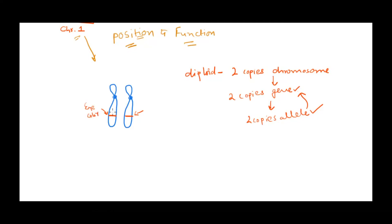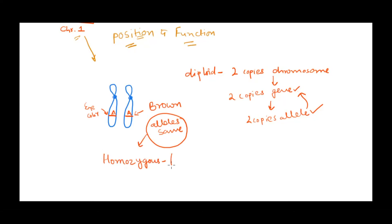It is possible that both chromosomes containing the gene for eye color have the same allele. For example, if I have a gene that codes for brown eye color and both my chromosomes contain that same allele — both alleles code for brown eye color — the alleles are the same. That condition is called homozygous. Homo means 'same,' and what is the same here are the alleles. So for the eye color trait, my genes are homozygous.